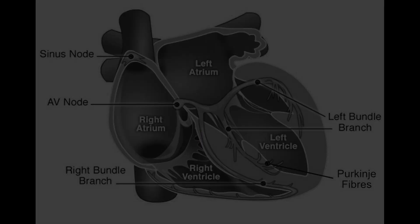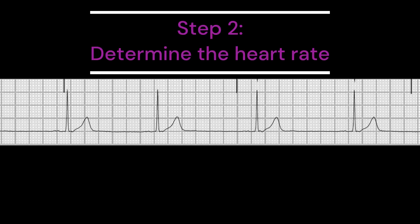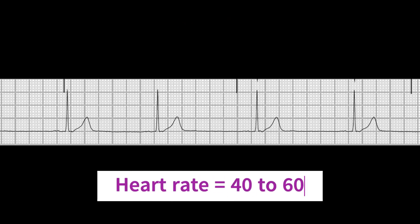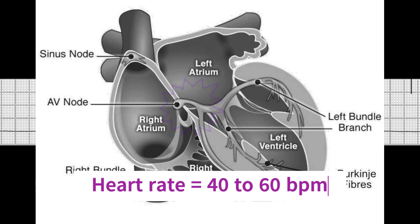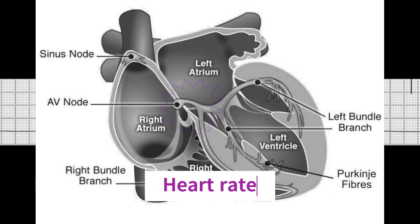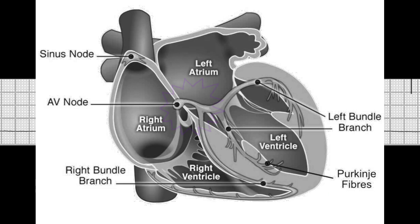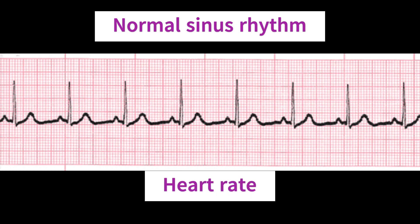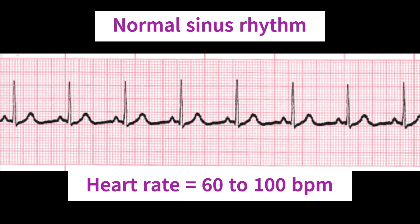Next, let's look at the rate. The heart rate in a junctional rhythm is usually between 40 to 60 beats per minute. This is due to the fact that the AV junction is taking over as the primary pacemaker of the heart. This is in contrast to a normal sinus rhythm, which has a rate of 60 to 100 beats per minute, where the SA node is the primary pacemaker.